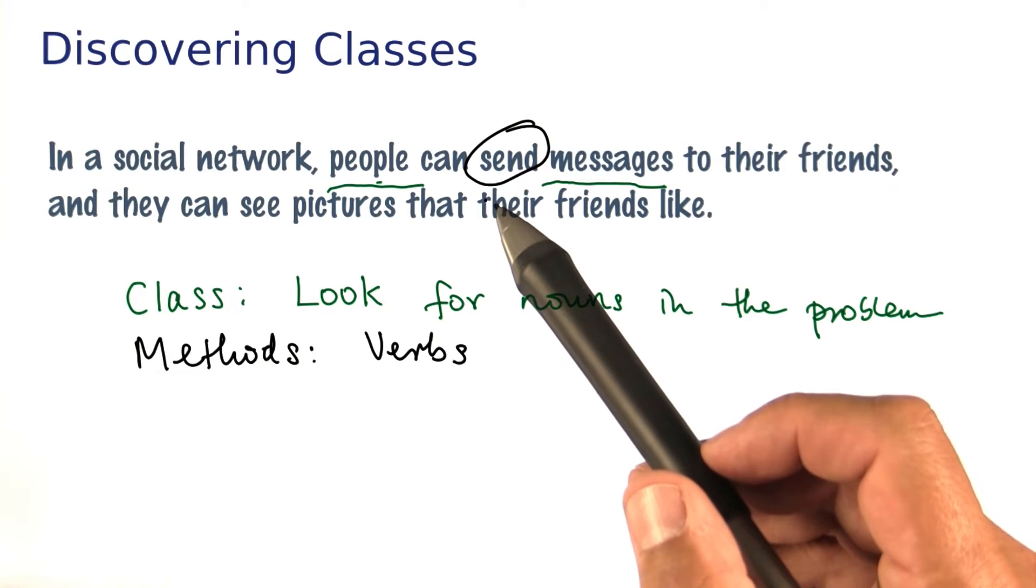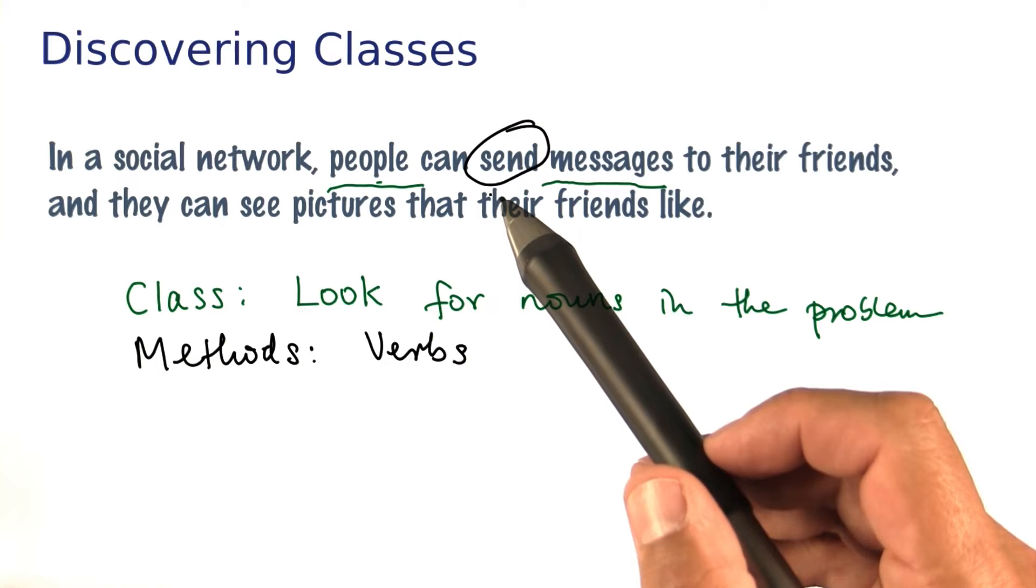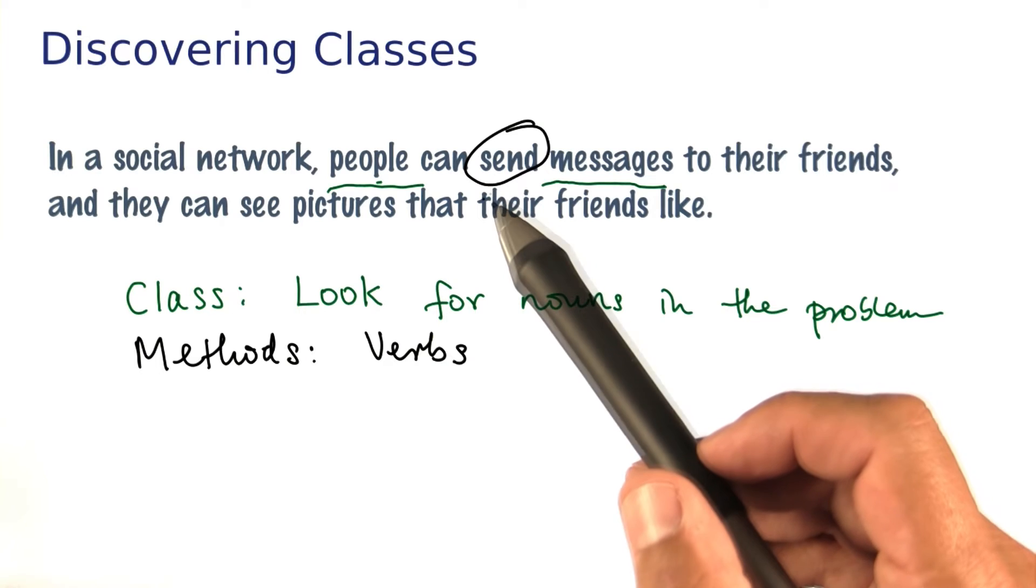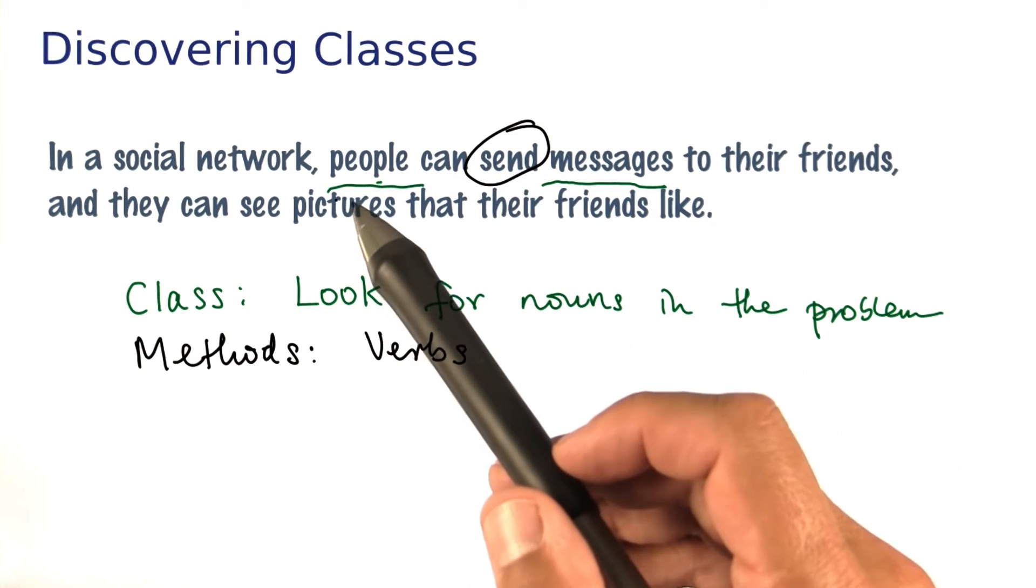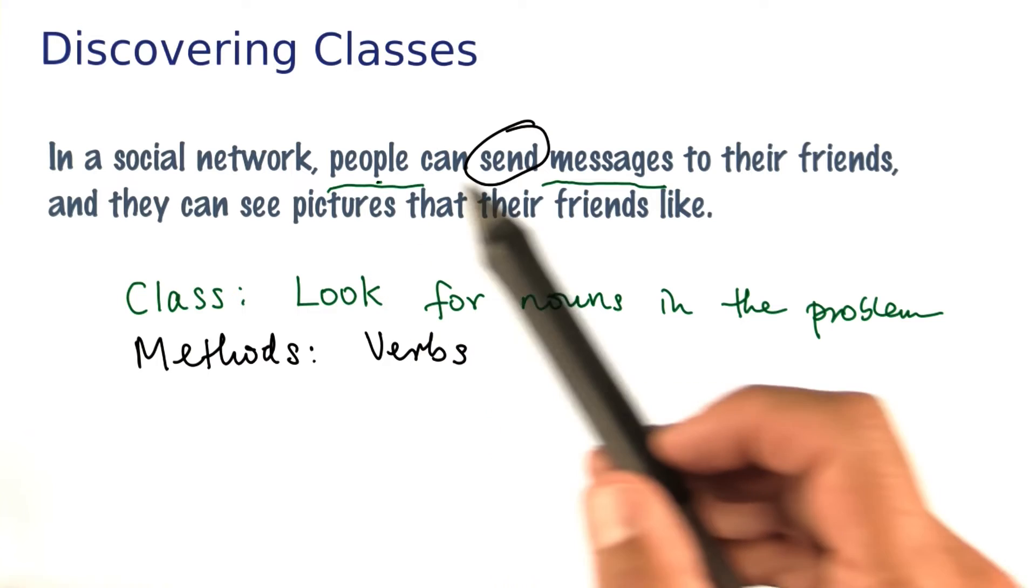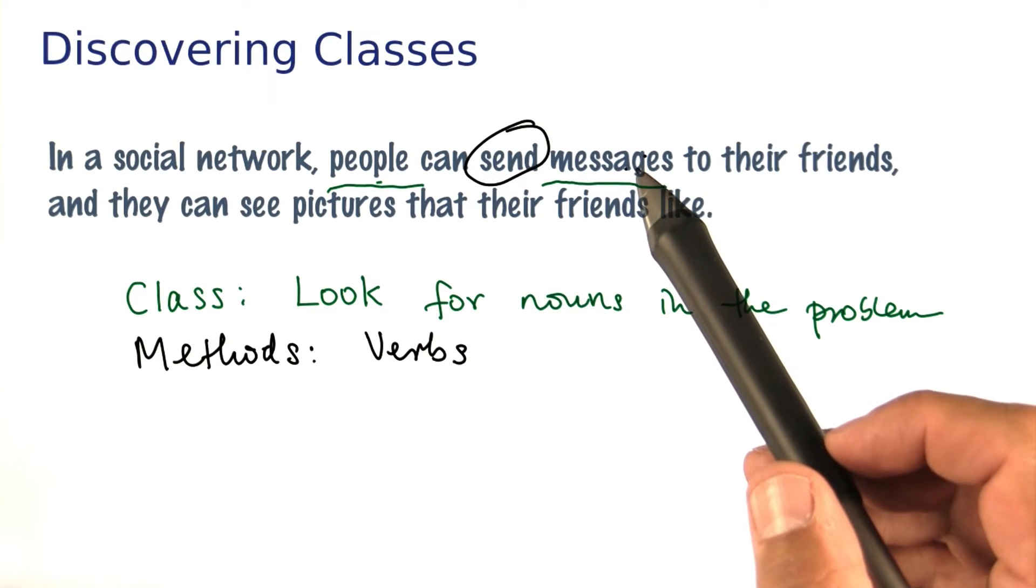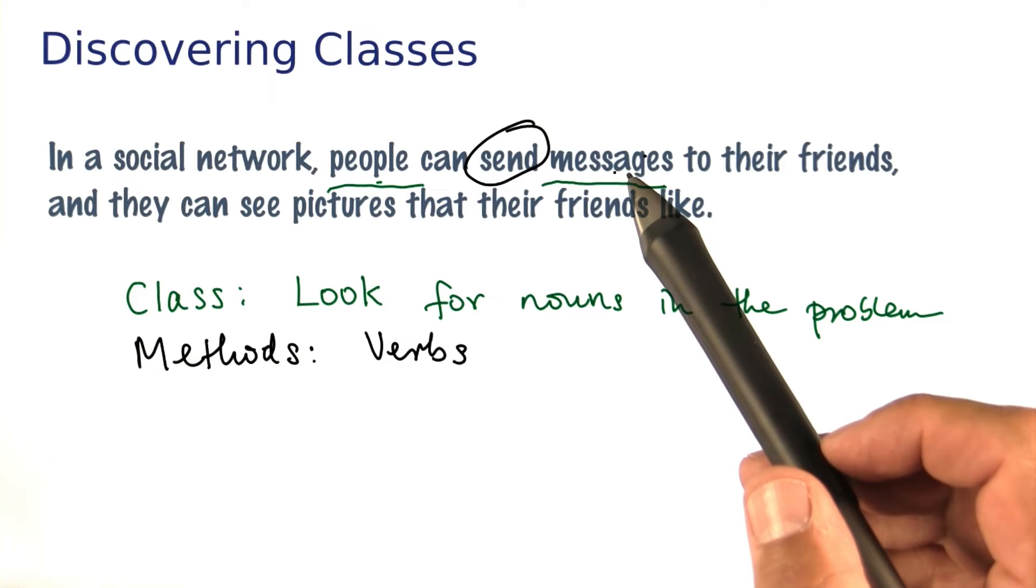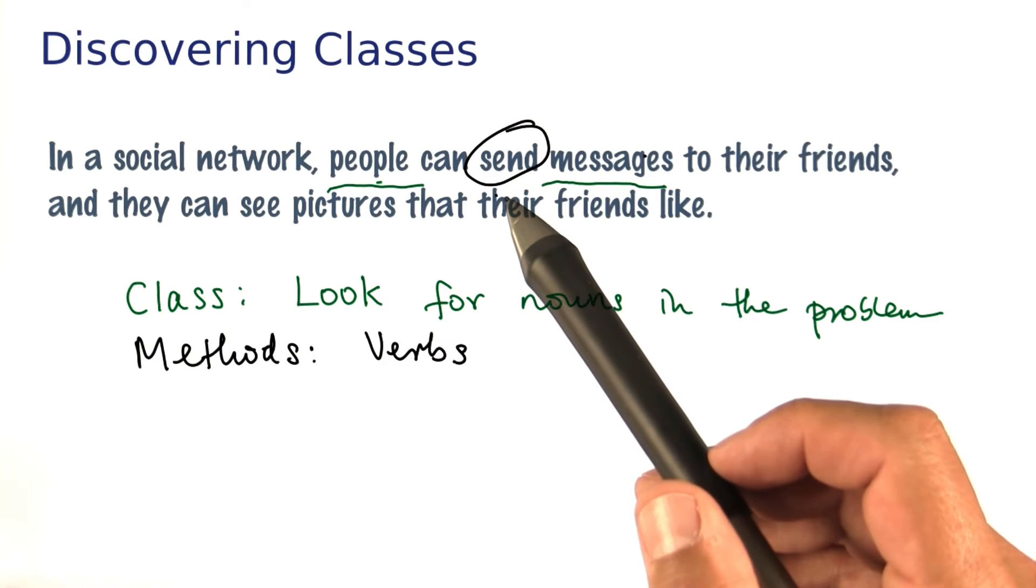And in object-oriented programming, there's this core belief that a method belongs to a class. There is a single class that is responsible for sending. And so we would want to make a choice. Is it the person class that has a send method, or is it the message class that has a send method? Or maybe there's another class that we haven't yet discovered. Maybe a mailbox class.